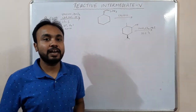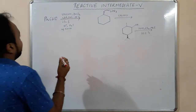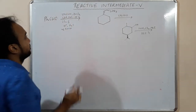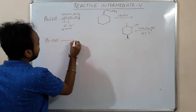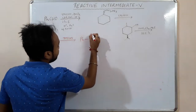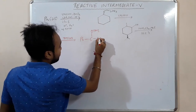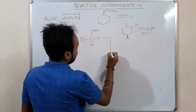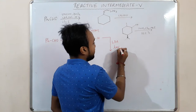Welcome friends. Let's start with reactive intermediate part 5. We have benzaldehyde (PhCHO) and TMSCN, which is a source of cyanide. So PhCHO in the presence of TMSCN will form an OTMS product. Now we have given LDA, which is a base.